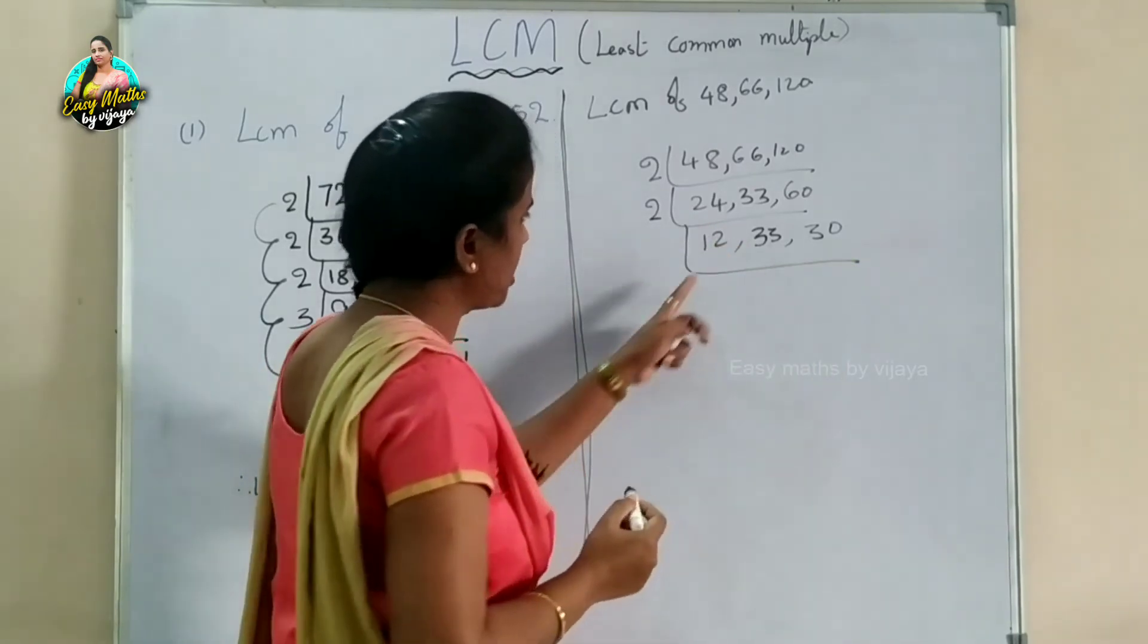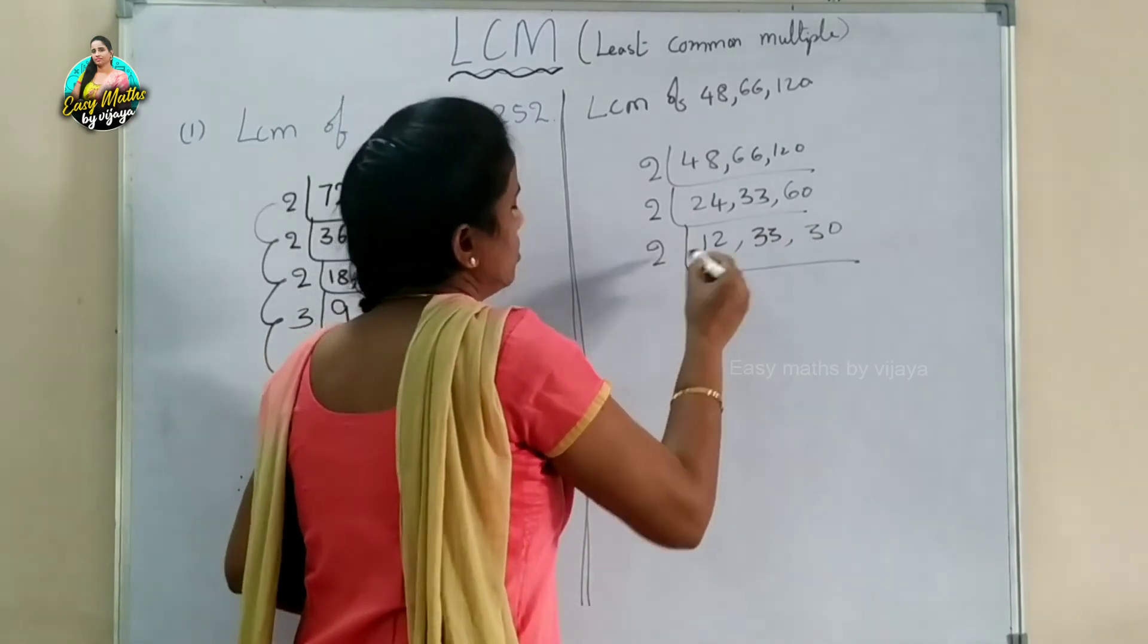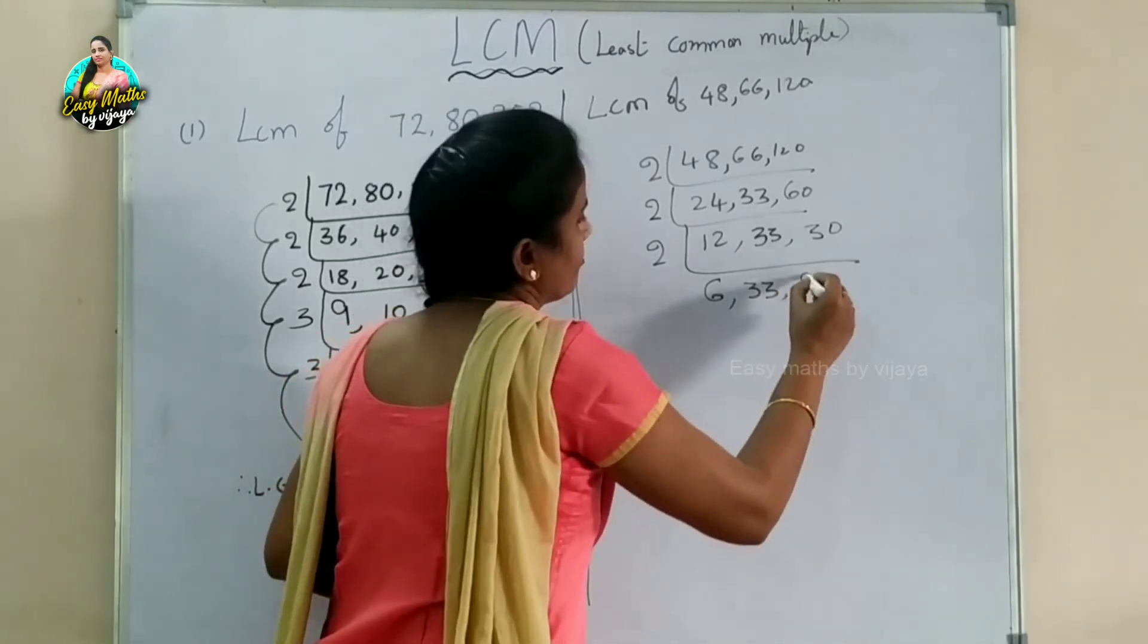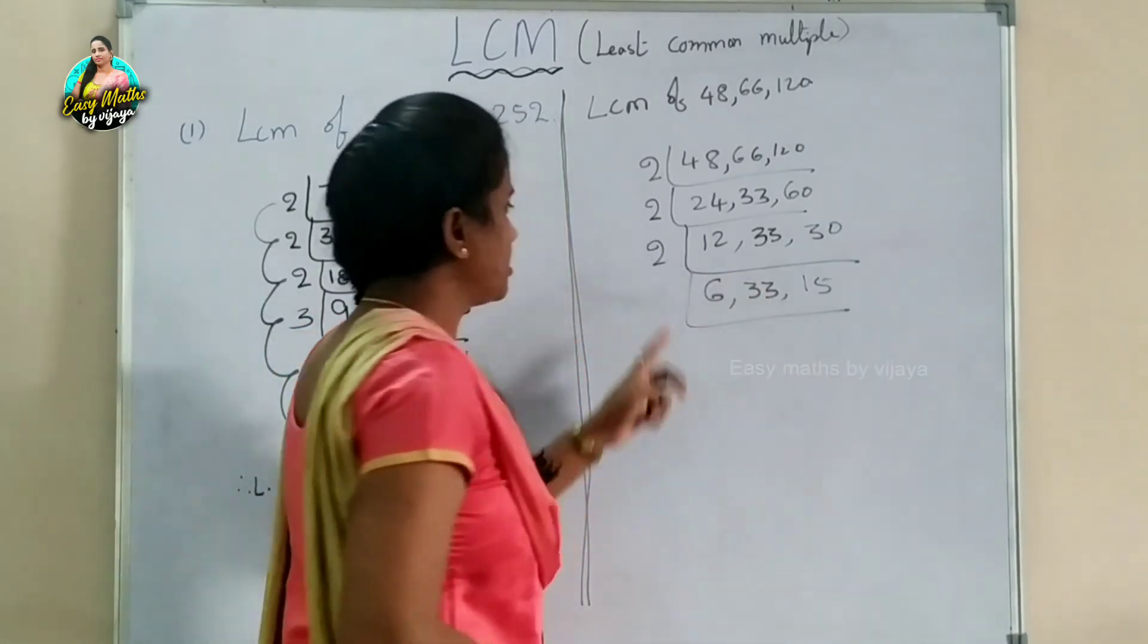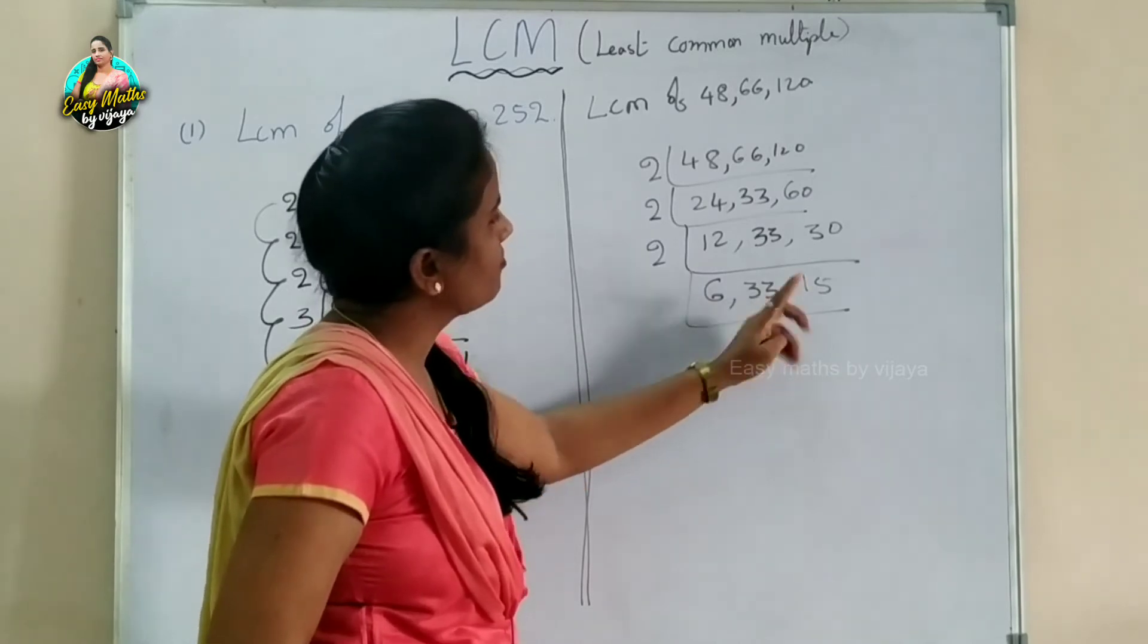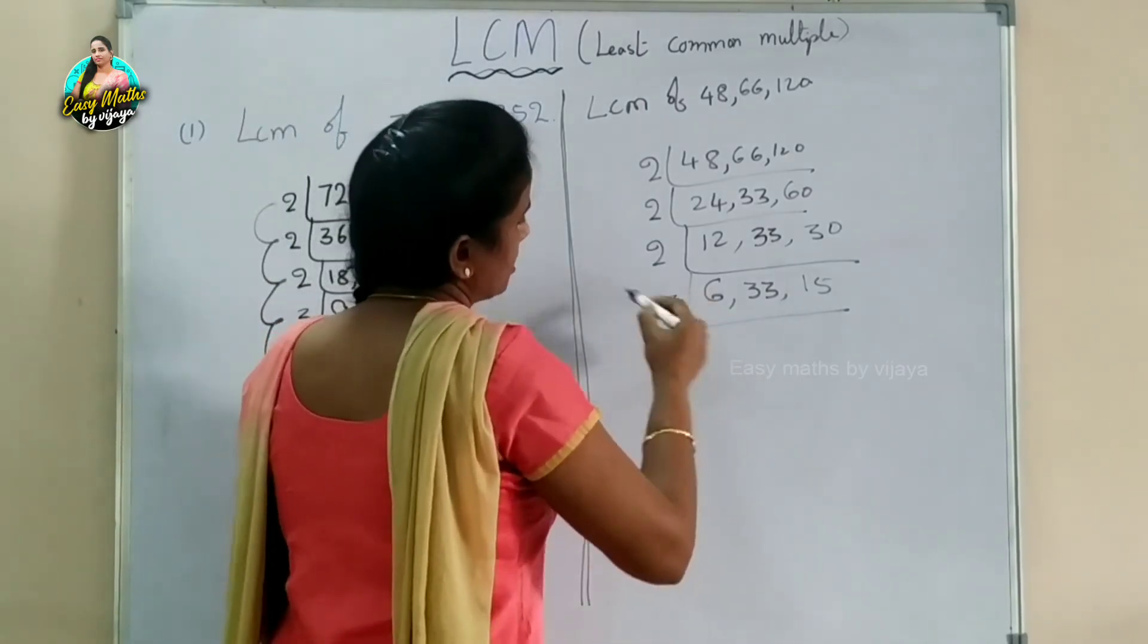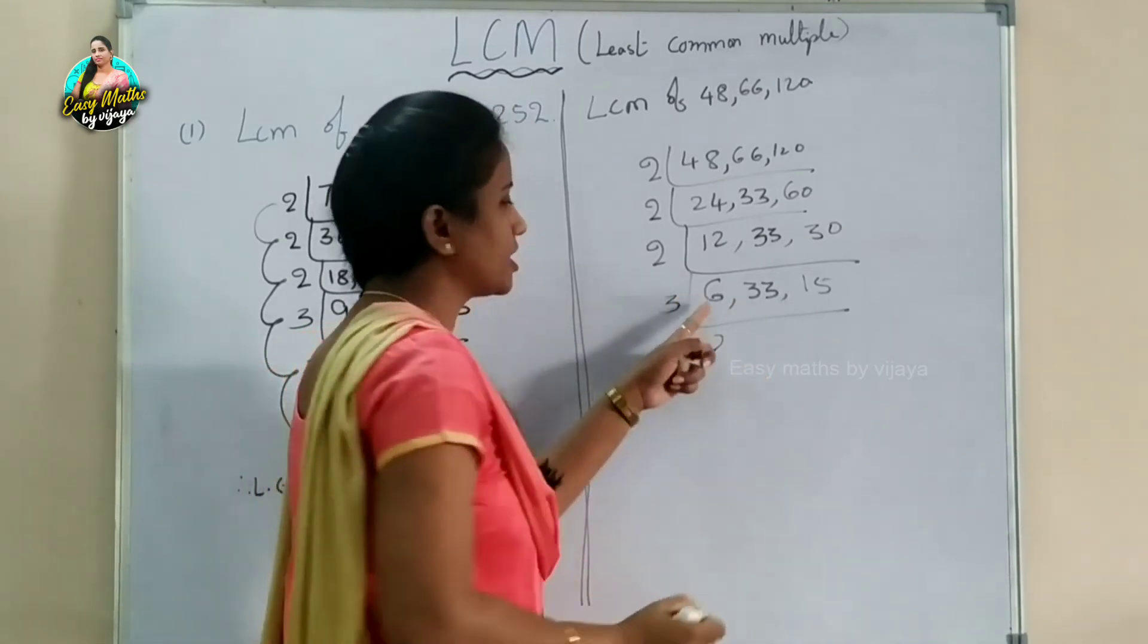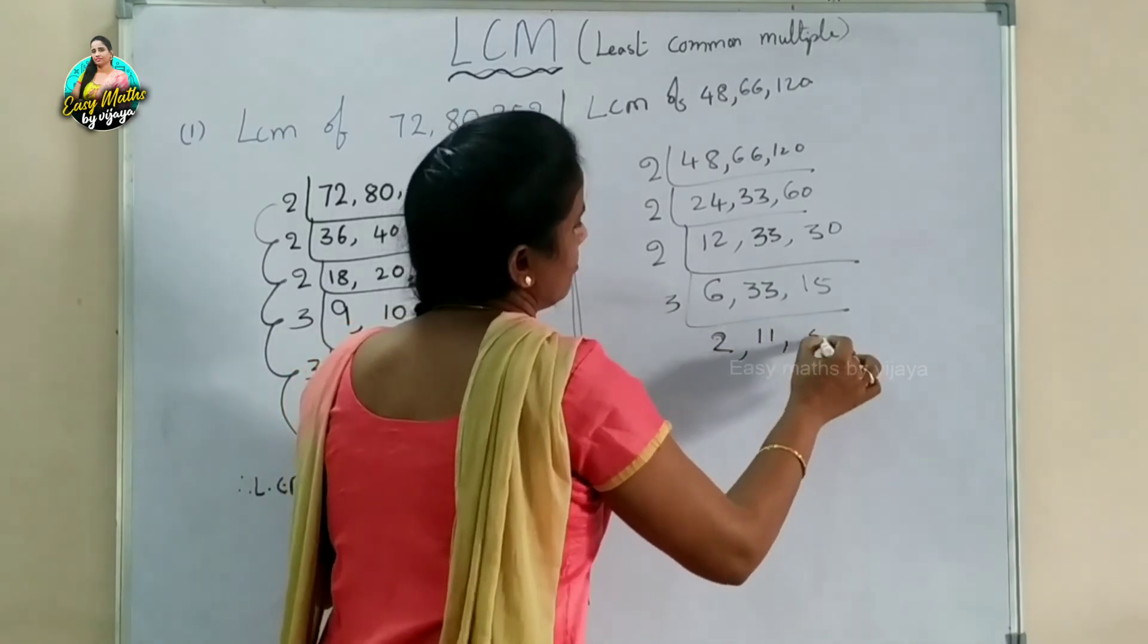Continuing division by 2: 24 becomes 12, 33 stays, and 60 becomes 30. Again: 12 becomes 6, 33 stays, and 30 becomes 15. One more time: 6 becomes 3, 33 stays, and 15 stays.